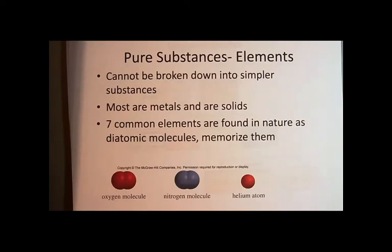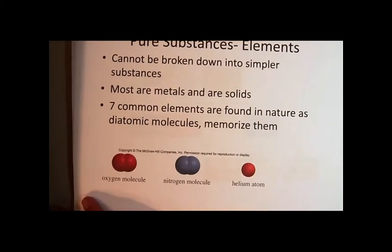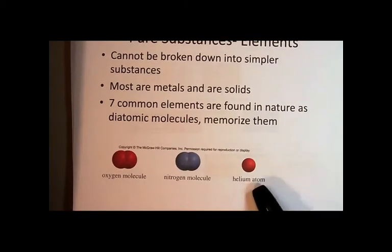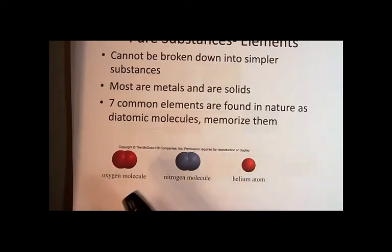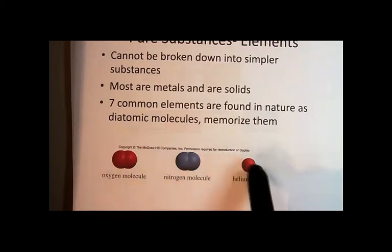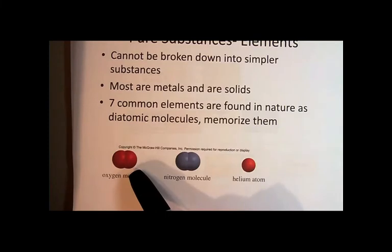But there are seven common elements that are never found as single atoms in nature. They're all found as diatomic molecules, and we're going to have to memorize them. But first of all, what I mean by a single atom, for example, helium. The element helium can exist in nature as a single atom all by itself, as a stable substance. However, oxygen and nitrogen cannot exist as a single atom. Rather, they exist as what we call diatomic molecules, two atoms chemically combined.